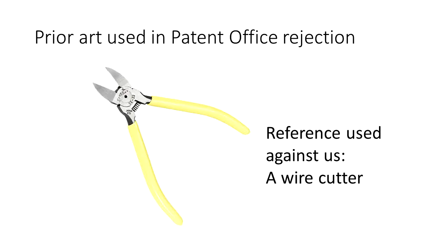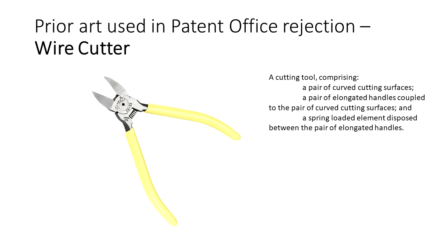So we file our patent application, and after some time — typically 12 to 24 months — we get what's called an office action, correspondence from the patent office that contains a rejection. In our example, the patent office cited a wire cutter reference against our invention. So let's compare our claim to the wire cutter described in the reference found by the patent office.